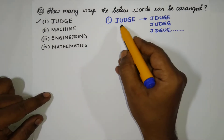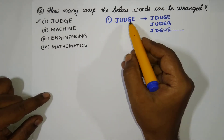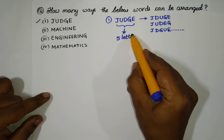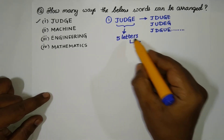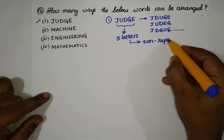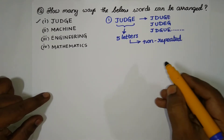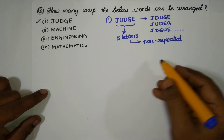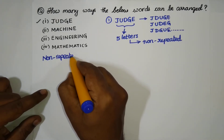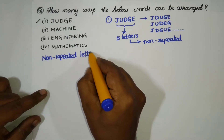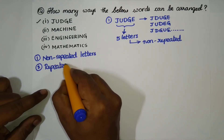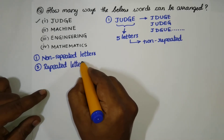First, count the number of letters in the word. For JUDGE: J-U-D-G-E, that's five letters total, and no letter is repeated. You have to always segregate problems into two varieties: non-repeated letters (Case 1) and repeated letters (Case 2).